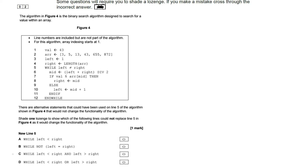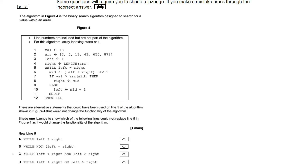The next question is a multiple choice question using lozenges. The front of the exam paper states: some questions will require you to shade a lozenge. If you make a mistake, cross through the incorrect answer and shade in the correct one. Be really careful with these because these questions are nearly always marked by a computer. You don't want to go through all the effort of working the answer out correctly and then fill in the lozenge wrong.